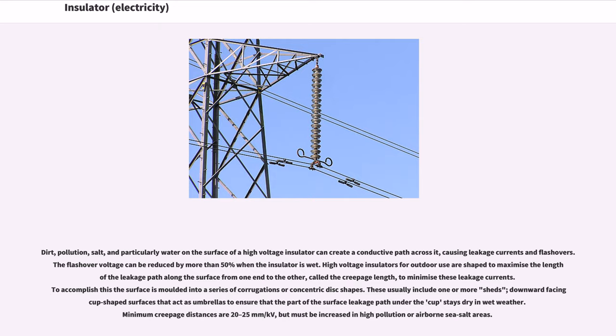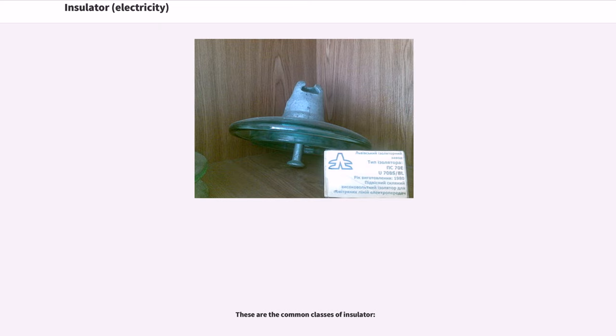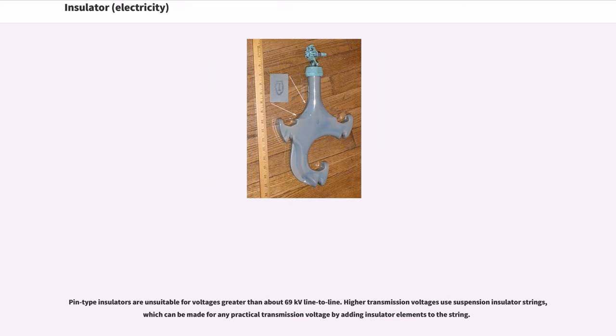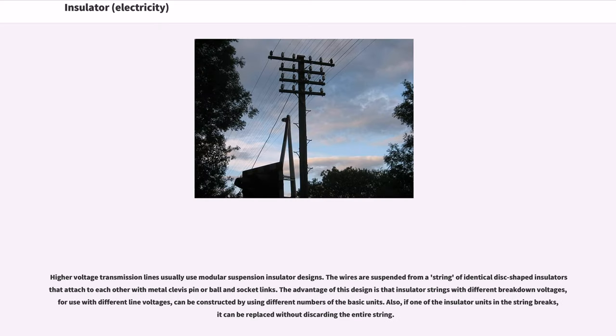Minimum creepage distances are 20 to 25 millimeters per kV, but must be increased in high pollution or airborne sea salt areas. Pin-type insulators are unsuitable for voltages greater than about 69 kV line to line. Higher transmission voltages use suspension insulator strings, which can be made for any practical transmission voltage by adding insulator elements to the string. The advantage of this design is that insulator strings with different breakdown voltages can be constructed by using different numbers of the basic units. Also, if one of the insulator units in the string breaks, it can be replaced without discarding the entire string.